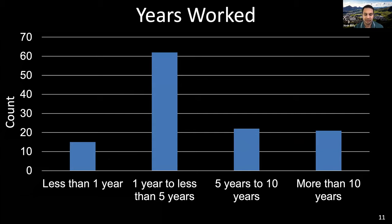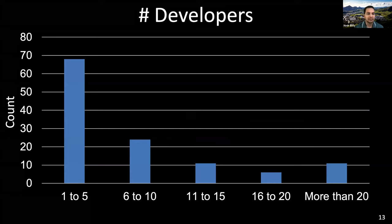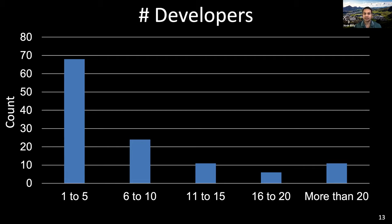This distribution suggests that participants had appropriate knowledge and experience to provide valid answers. Project stage helps determine which types of testing may be most useful. The projects represented by the respondents were overwhelmingly in the released state, which is important because projects at this stage should have already established useful testing programs. Most respondents worked on smaller teams in terms of number of developers.